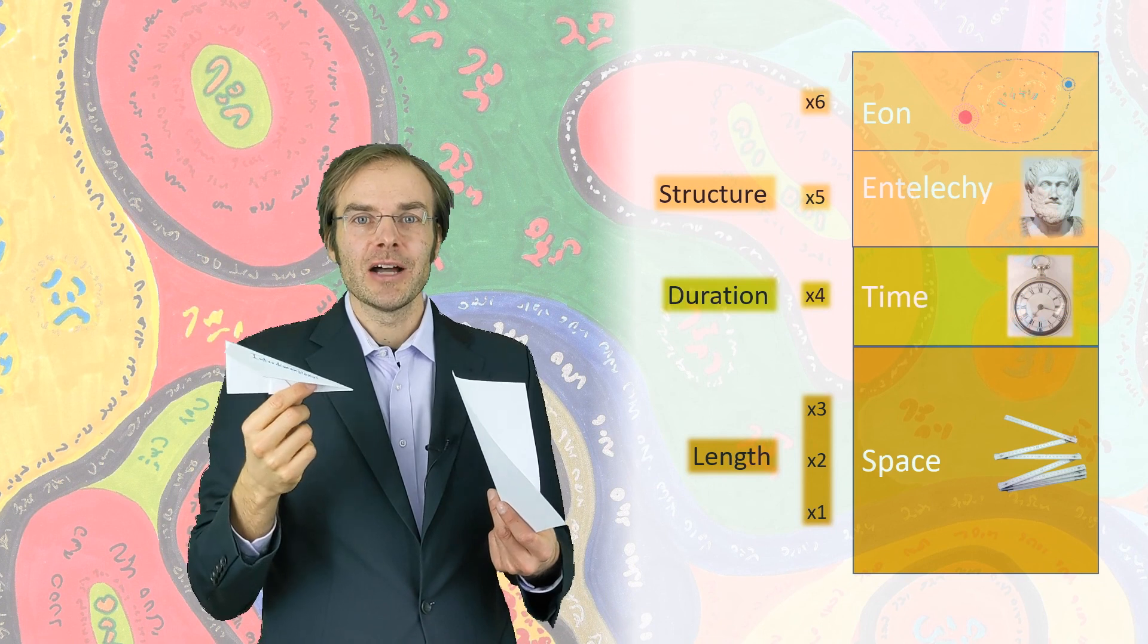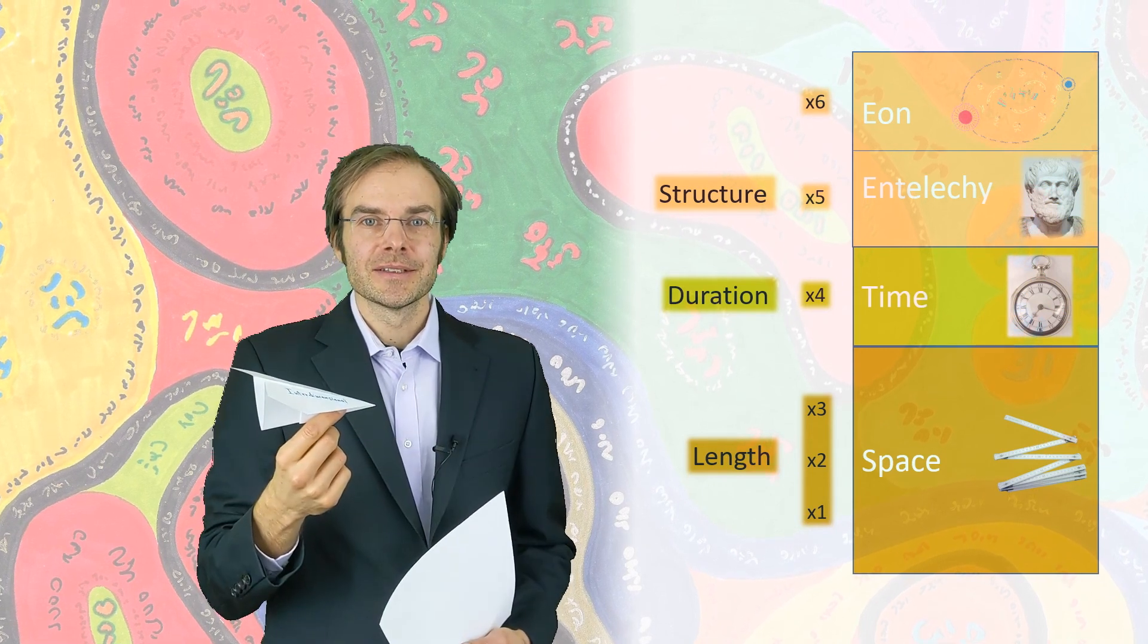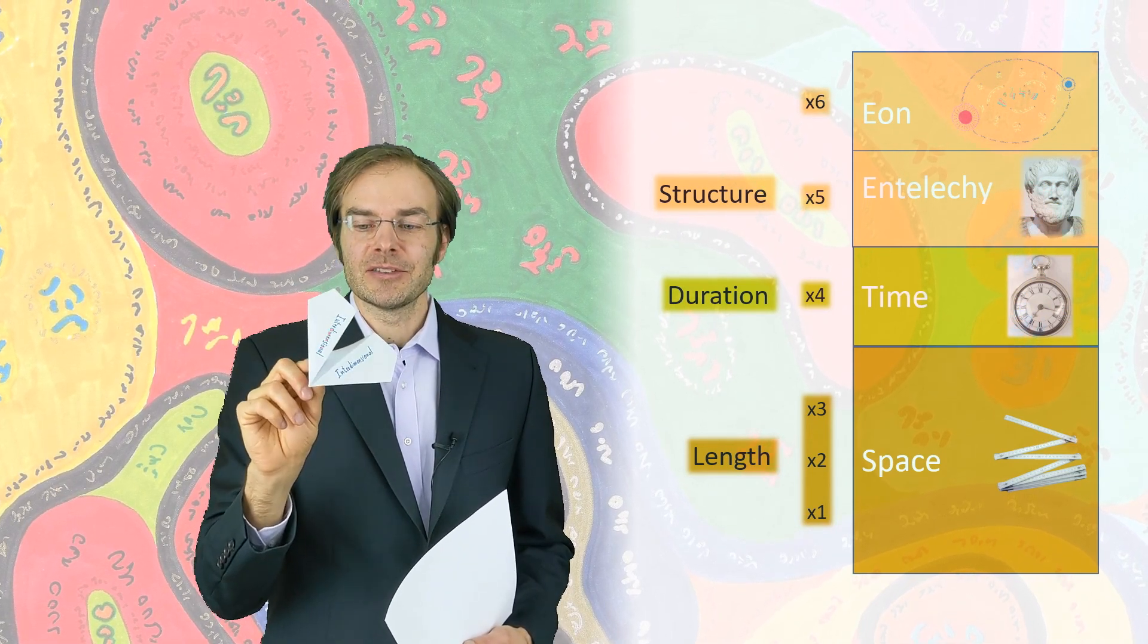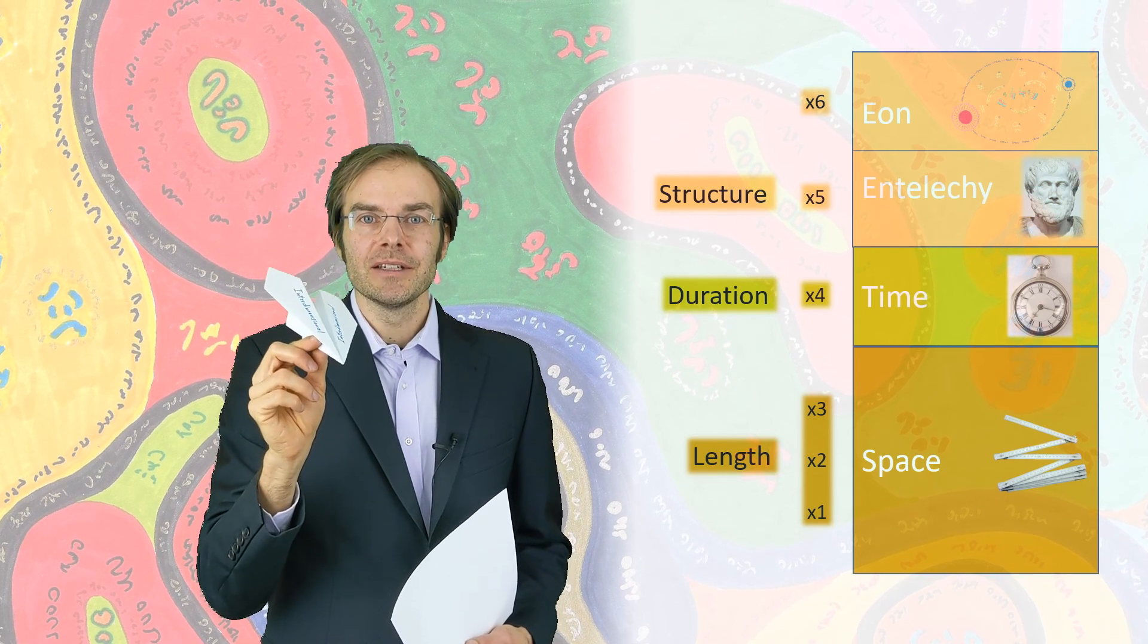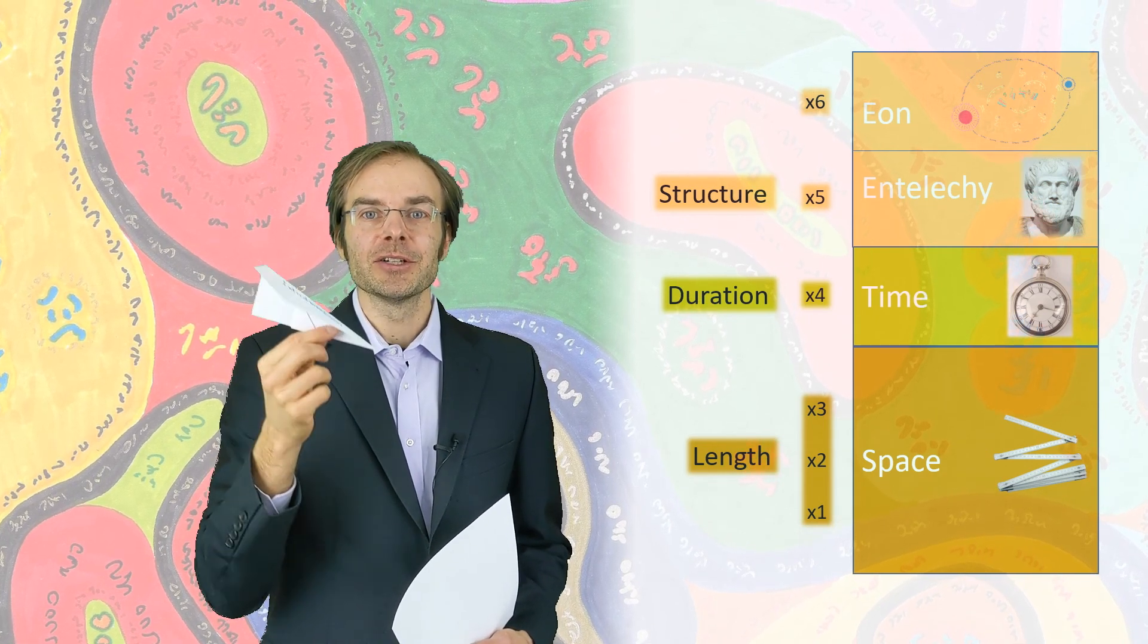My airplane is obviously more highly structured than my blank piece of paper. The question is now, of course, how do you evaluate the fact that it's been folded? And where do you place the structure in terms of a linear coordinate?